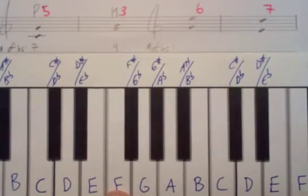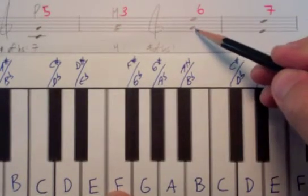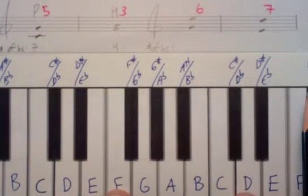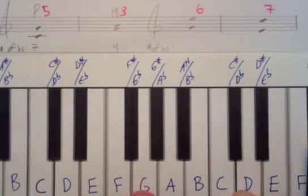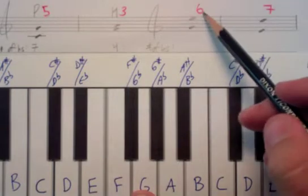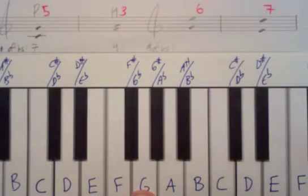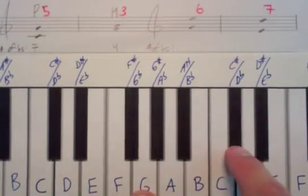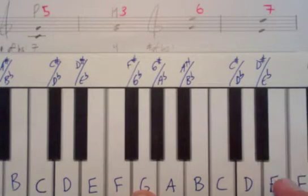Here we have G up to E — G right here going up to E right here. Let's count the half steps. We know the generic interval is a sixth. Starting on G, counting the jumps: one, two, three, four, five, six, seven, eight, nine.